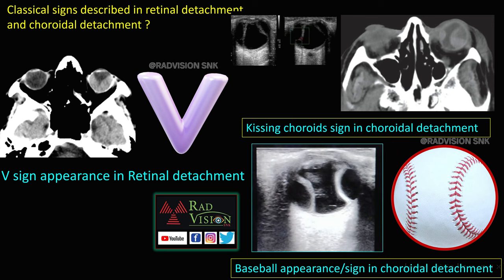Next is a case of retinal detachment, where there is subretinal hemorrhage. In retinal detachment, the subretinal hemorrhage mimics a V-shaped appearance because the retina is attached to the optic nerve head. Remember the classical V-sign appearance seen in retinal detachment.